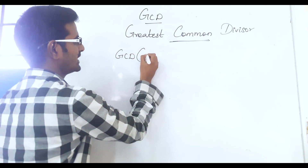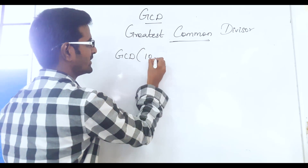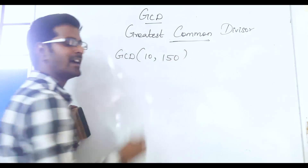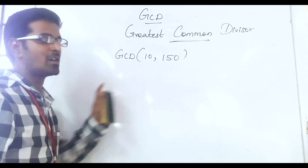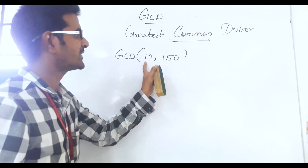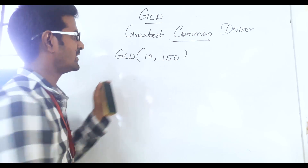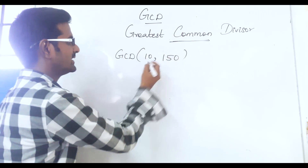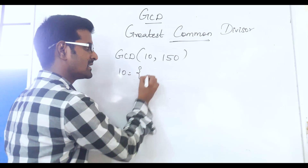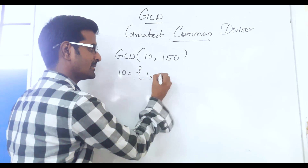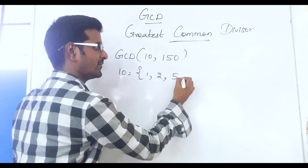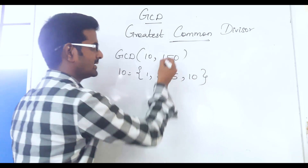Next, GCD of 10, 150. We will find out the greatest common divisor of 10 and 150. Now we will list out the divisors of 10: 1, 2, 5, 10.